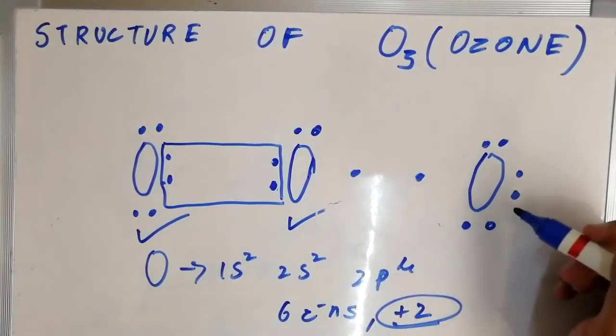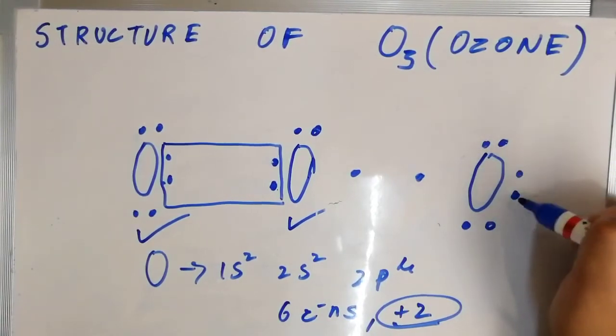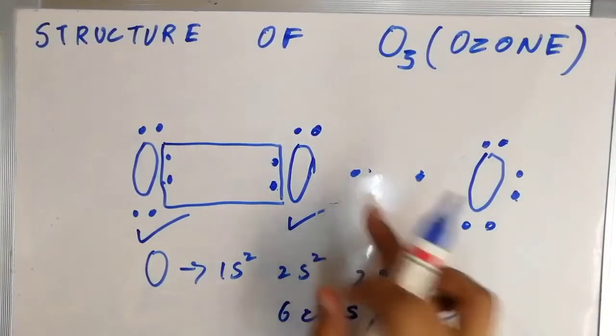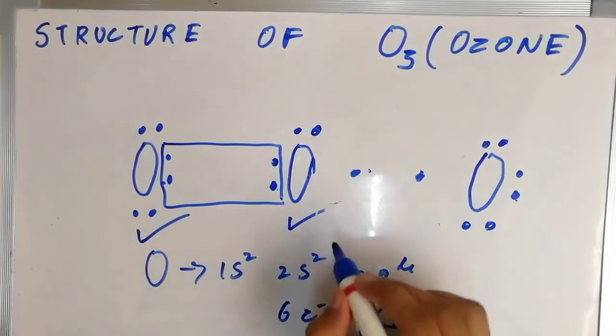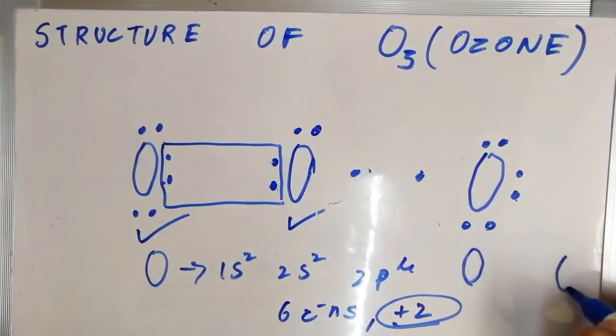But now you can see this oxygen atom has one two three four five six seven eight. And this bond is represented as if you can see, if I'm going to write this oxygen atom here and this one here and this one here.